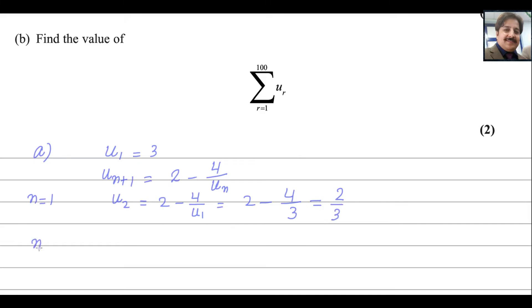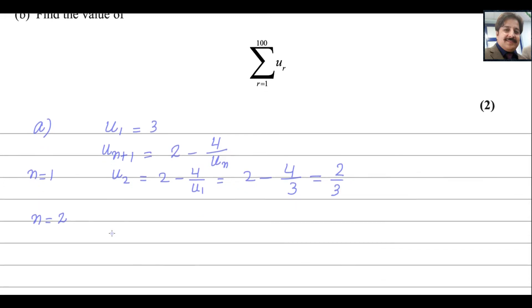When n equals to 2, then you get the answer for U3. When n is 2, you will get U3 for sure. And it will be equals to 2 minus 4 over U2. Use the values 4 divided by U2 that is fraction. It will be equals to 2 minus 3 goes up, it will be 12 over 2. 12 over 2 is 6.